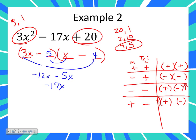Are you okay with me just checking the outer and the inner? If you want to check the whole thing, please do. But I'm doing the O and the I to make sure that the middle works. I already know the F works — three X and X? Check. I know that negative five and negative four give me twenty? Check. I just need to make sure that the outer and the inner give me what the middle should be.